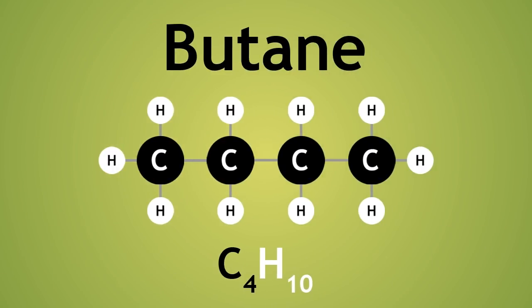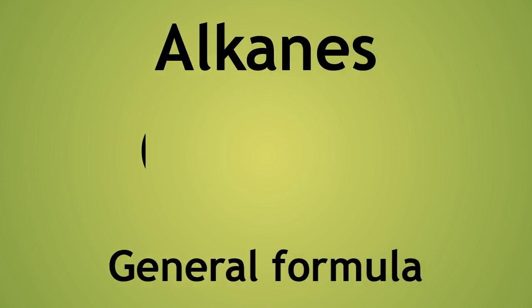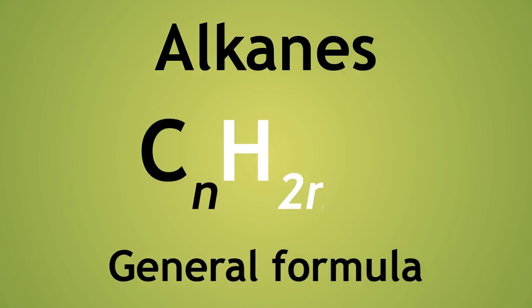This alkane series continues and follows the general formula CnH2n+2. A general formula allows us to describe a series of molecules that differ from each other by a constant unit.